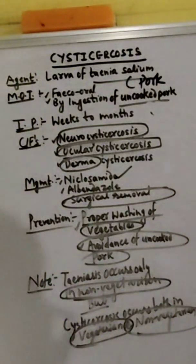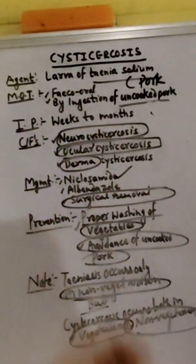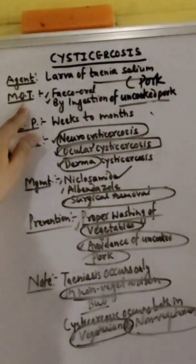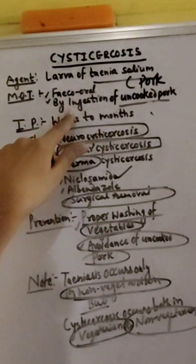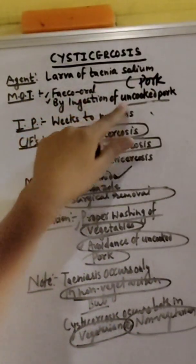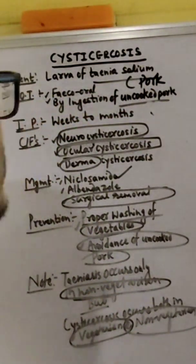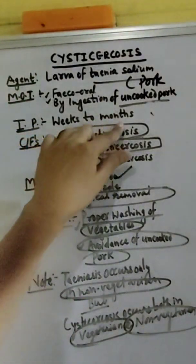So if you are having pig meat, the larva of Taenia solium will be the causative agent of cysticercosis. The mode of transmission is feco-oral, by ingestion of pork meat of pig. The incubation period is weeks to months.